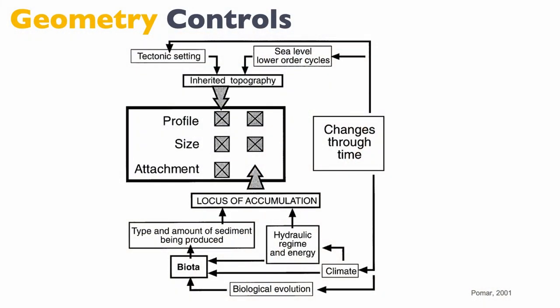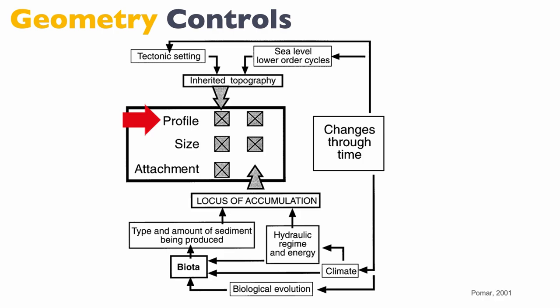There's a beautiful paper by Louis Pomar that I recommend — you have the reference on the slide here — that goes into the detail of what controls geometry, and I think it's really a good read. So here you have all the different controls on the geometry of a carbonate buildup. You can characterize the geometry of this buildup by the profile — whether it's steep-sided geometry, flat top, or a ramp homoclinal or distally steepened.